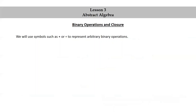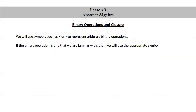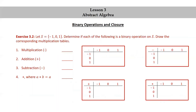We will use symbols such as star or dot to represent arbitrary binary operations. If the binary operation is one that we are familiar with, then we will use the appropriate symbol — for example, we will use the symbol plus when the binary operation is addition. Let's try an exercise. Let S be the set consisting of negative 1, 0, and 1. Determine if each of the following is a binary operation on S, and draw the corresponding multiplication tables. Now's a good time to pause this video, try this problem yourself, and then resume the video to check your answers against mine.